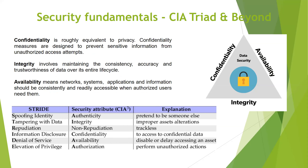Let's talk about security fundamentals — the CIA triad: Confidentiality, Integrity, and Availability. Ethical hackers report findings based on which of these three principles are affected. If all three are affected by a vulnerability, it's a critical finding; if two are affected, it's high; if one is affected, it's medium or low.